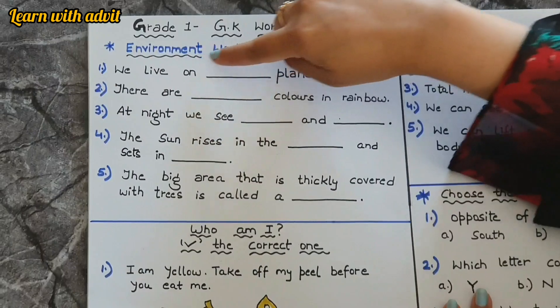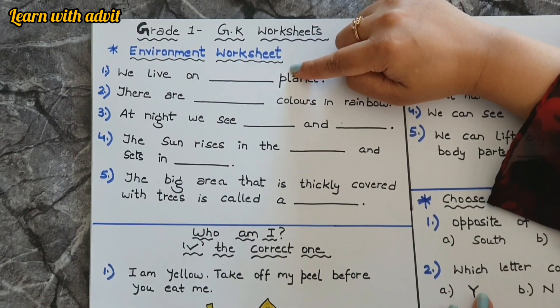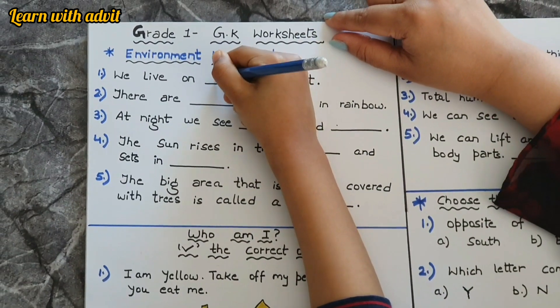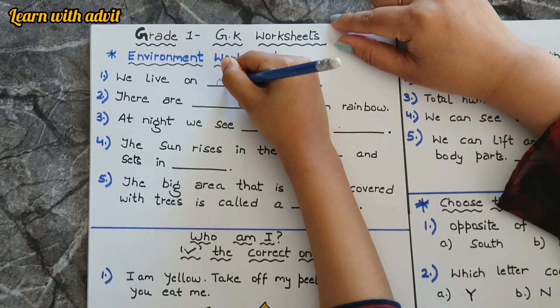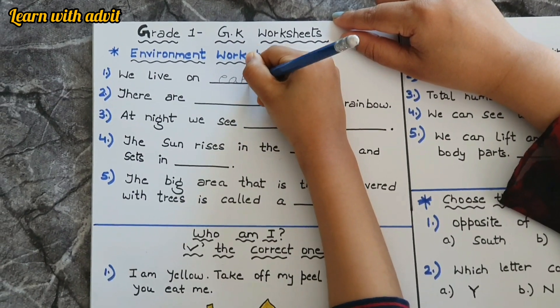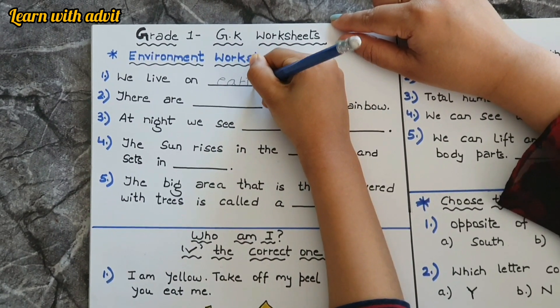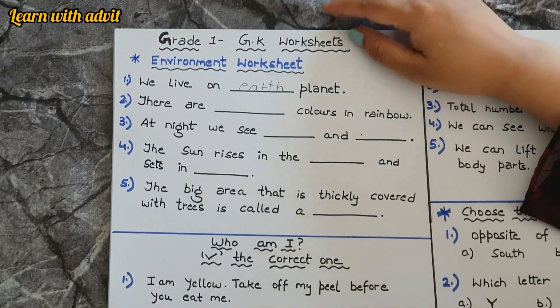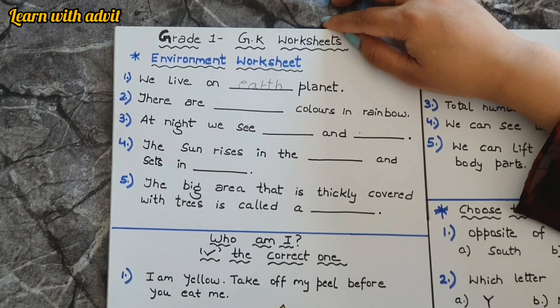We live on which planet? Planet Earth, yeah. There are how many colors in the rainbow? Seven, very good.